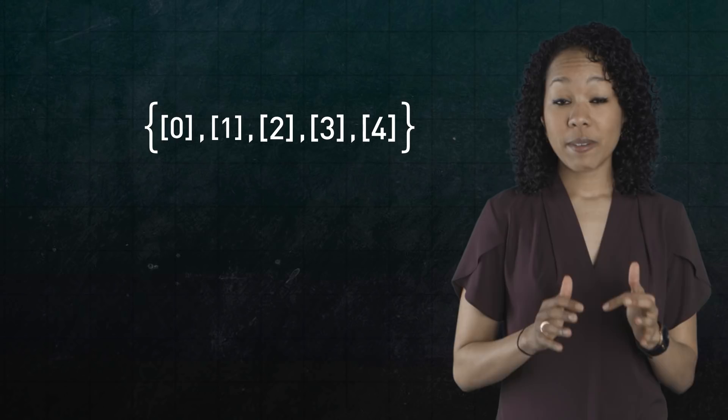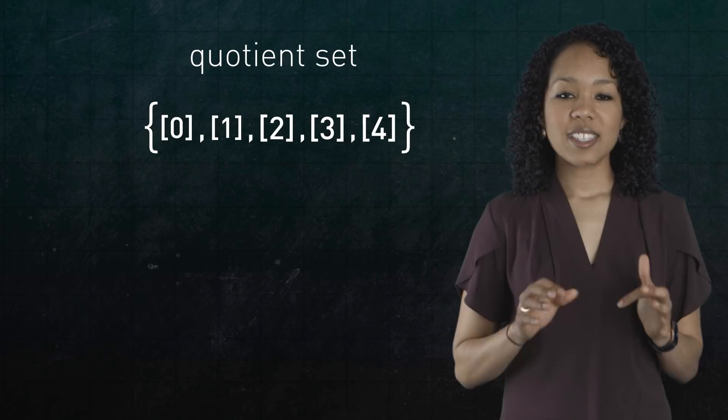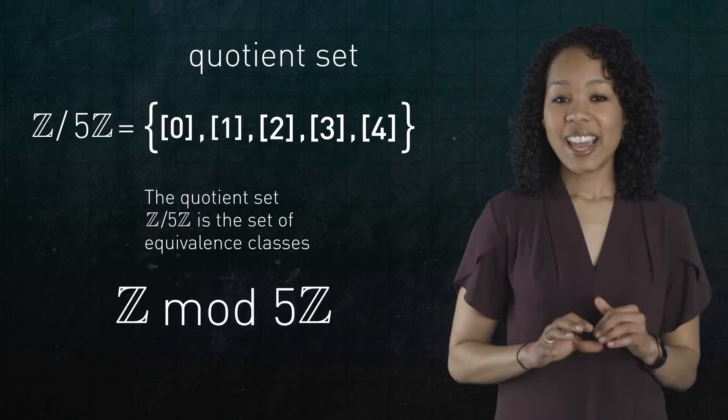Finally, the set of these five equivalence classes, 0, 1, 2, 3, 4, also has a name. It's a quotient set, which we label z slash 5z, pronounced z mod 5z. And this allusion to division is no coincidence.